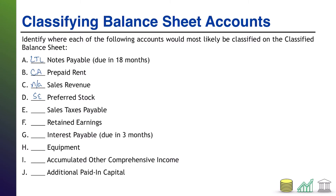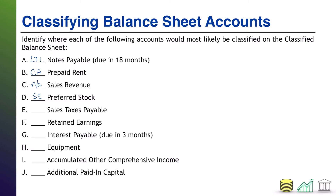After that: sales taxes payable. Payable tells us that this is going to be a liability. Sales taxes are taxes that you owe to the government, and they're not going to expect you to wait over a year to pay that. So we will call this a current liability.